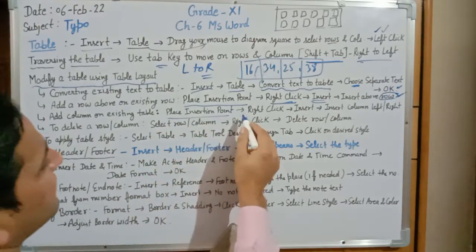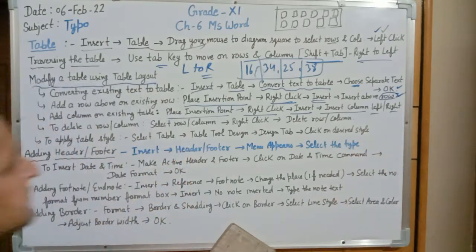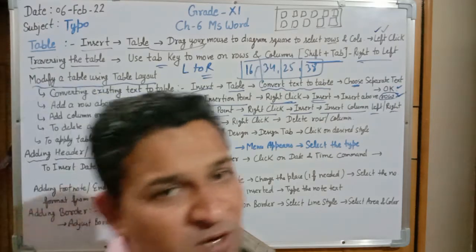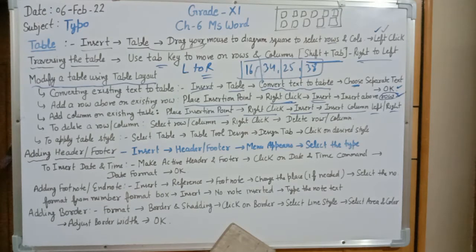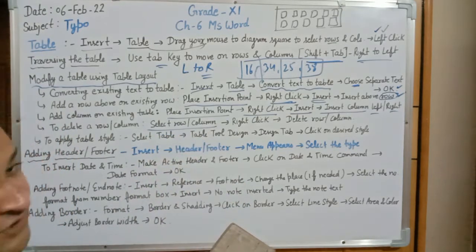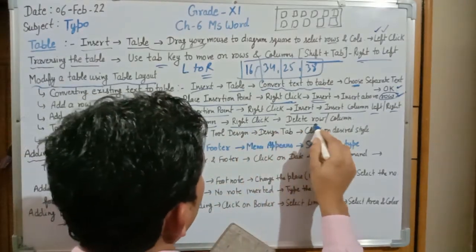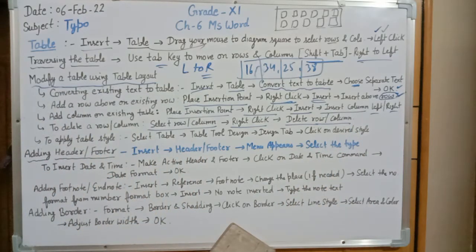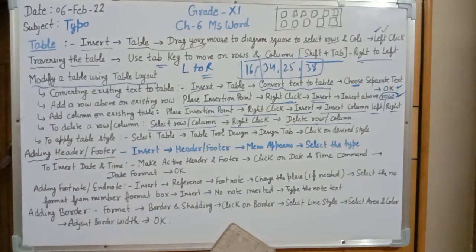Place your insertion point, right-click, go to the Insert option, and select Insert Column Left or Right. To delete a row or column: first select the specific row or column you want to delete, then right-click and select the Delete Row or Delete Column option.